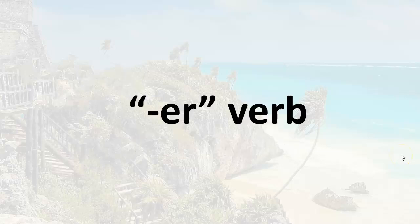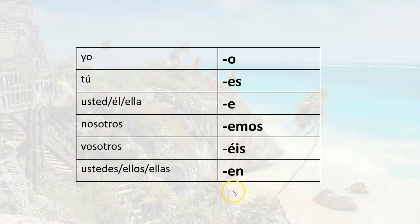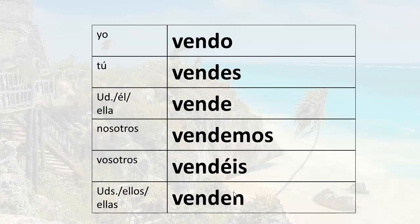Vender is a regular ER verb, which means it follows a regular pattern of conjugation. If you learn the pattern for one regular ER verb, you can conjugate all regular ER verbs. These are the endings for the regular ER verbs. Once you memorize those, you can conjugate any regular ER verb. They have to be memorized — there's really no way around it. Let's review what we learned last time.